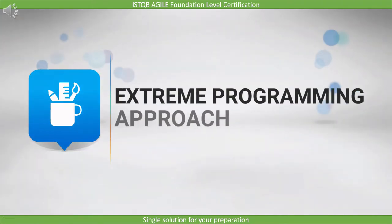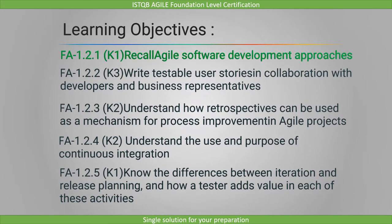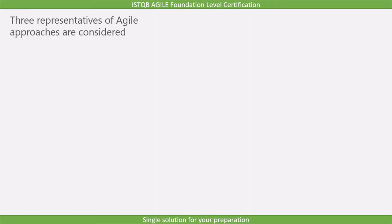In this lecture, we will cover extreme programming in detail. The learning objective is to recall agile software development approaches, marked as K1, so you have to remember the points. I will explain the points to help you remember them. There are several agile approaches, each of which implements the values and principles of the Agile Manifesto in different ways.